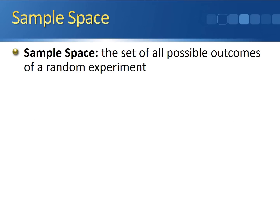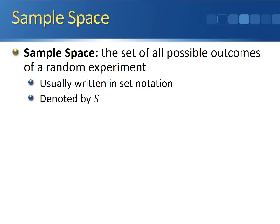The sample space is defined to be the set of all possible outcomes of a random experiment — basically a list of all the possible results that you can get when you run a random experiment. The sample space is usually written in set notation, generally contained inside a set of braces or parentheses. The sample space is also generally denoted by the capital letter S.